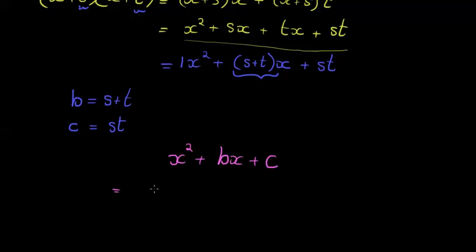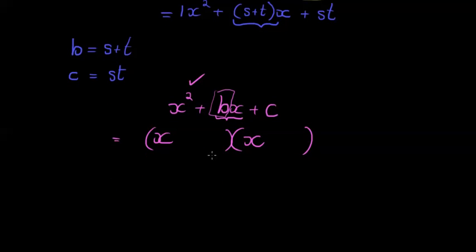What I'm going to do is make two brackets. In the one bracket I'm going to put x as well as in the other bracket, because x times x is going to give me the x². Now for the middle term, that b is going to be the sum of these two values that I'm going to write in there, and c is going to be the product of those two values.